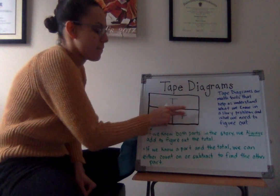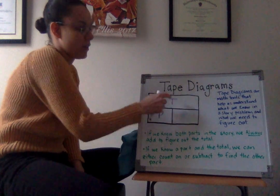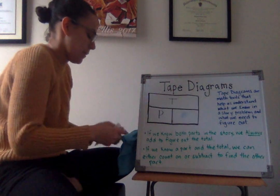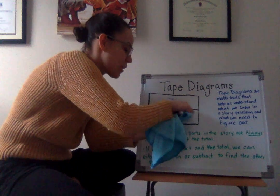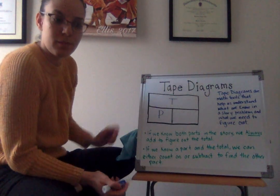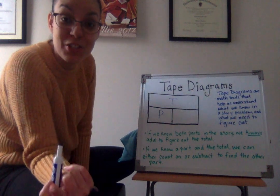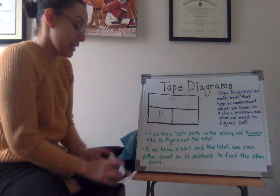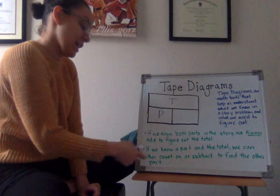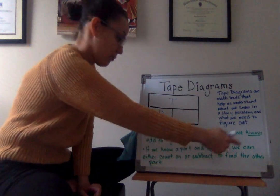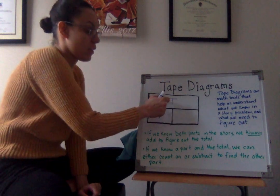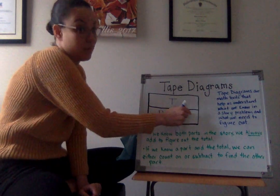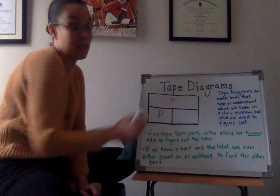But what about if we have just one part and the total? We have a part and a total, and we need to find that other missing part. What is a strategy that we can use to figure it out? Yeah, I heard two different answers. Some ones that we can count on, and some ones that we can subtract. Yes, if we know a part in the total, we can either count on or subtract to find the missing part. So we can either do the total minus the part equals the missing part, or part plus counting on to figure out this part until we get to the total.